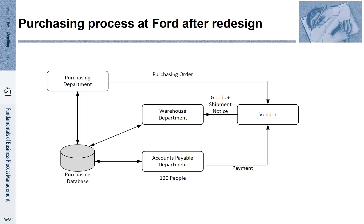This new process required only 120 people to handle all orders. All the different sources of errors were eliminated by introducing a central repository of information. This was a drastic success story, emphasizing the importance and the power of business process re-engineering.